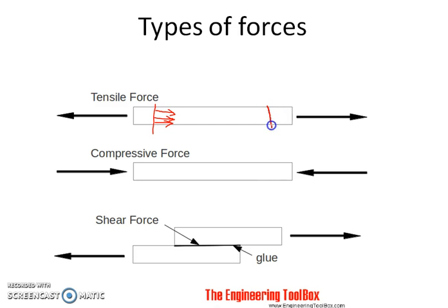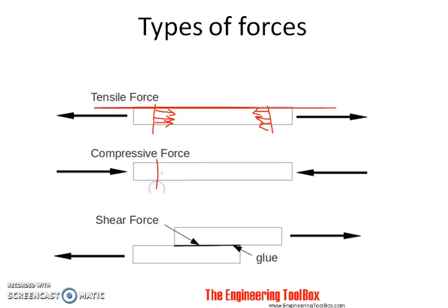The stresses developed perpendicular to the cross-sectional area are called tensile stresses. If you take a cross-section at this end, the stresses will be developed in this direction. Next, if there is a compressive force, the stresses will be developed in the opposite direction — this is nothing but compressive stresses. Similarly, on this side the stresses are developed in the opposite direction. So these are the tensile stresses and the compressive stresses.